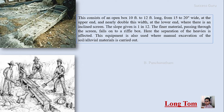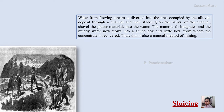The long tom is somewhat equivalent to the rocker, but with a key difference. With the rocker, you take the sample out, pass it to the rocker, and shake it manually. With the long tom, it is set in place and you simply pick the sediment and pour it into the long tom. The flowing water then separates the valuable minerals from the gangue material.